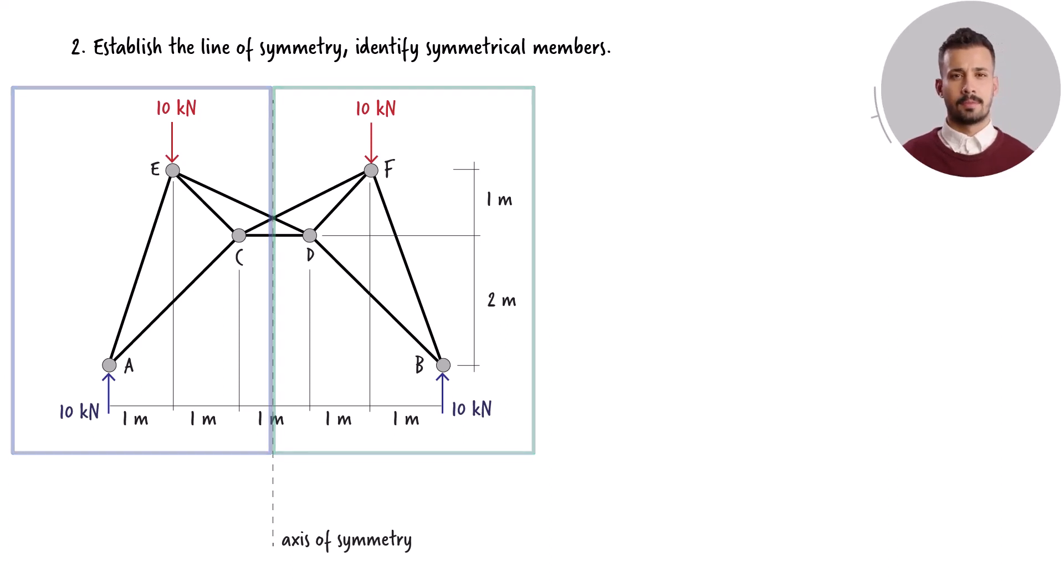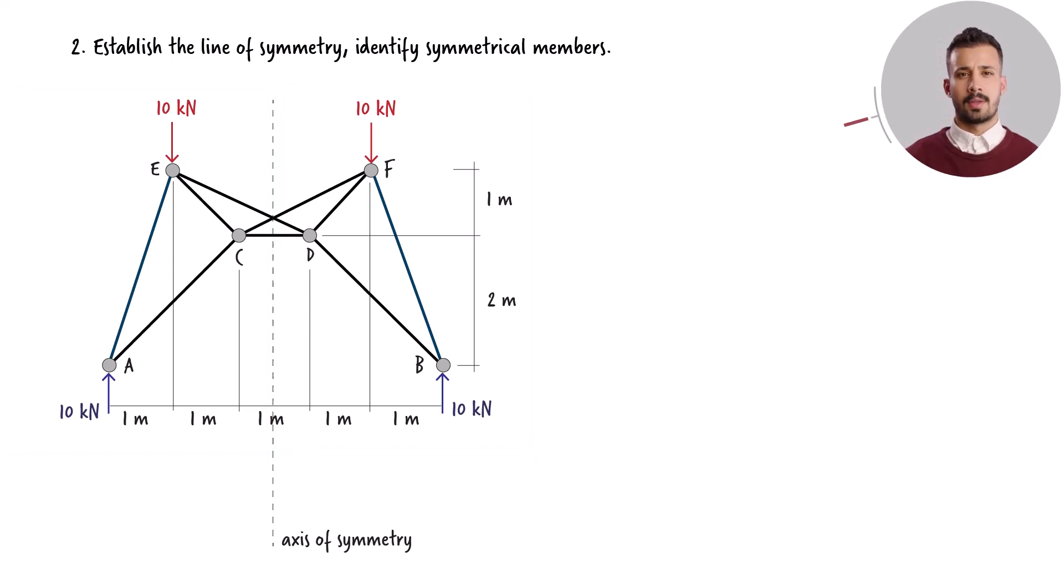Consequently, we can deduce that the forces on the left and right sides of the truss are identical. In other words, the force in member BF equals the force in member AE. Likewise, the force in member BD is equal to the force in member AC. The force in member DF matches that of member CE. Additionally, members CF and DE bear identical forces.